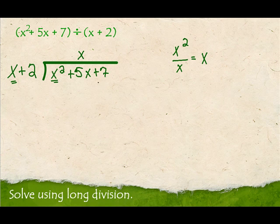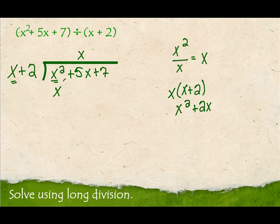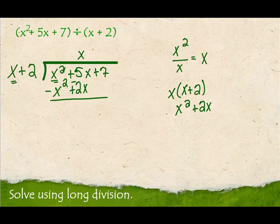To get the number that goes underneath, I'm going to take x and distribute it into x plus 2. x times x is x², and x times 2 is 2x. That gives x² plus 2x underneath. Now I subtract down — but I think adding is easier, so I change the signs and add down. x² minus x² becomes 0, 5x minus 2x is 3x, and I bring down my 7, just like regular long division. Then I start all over again.